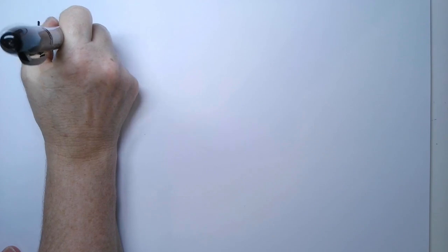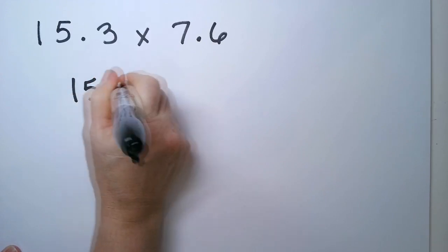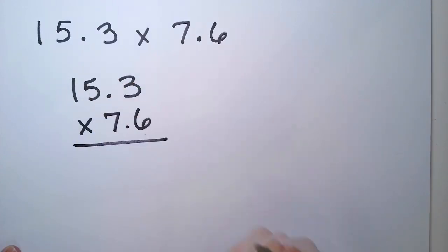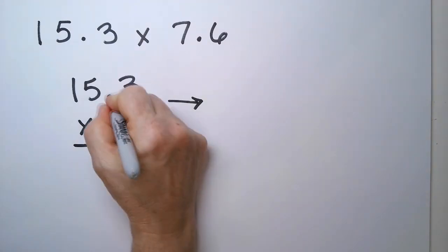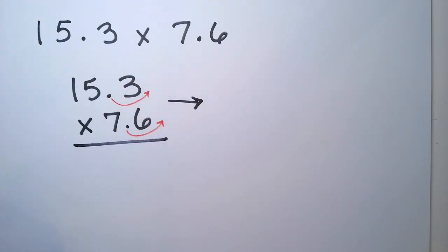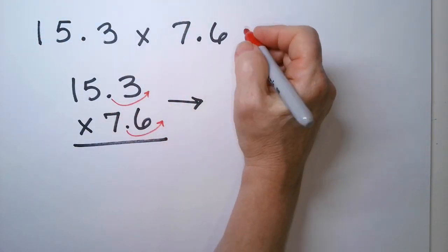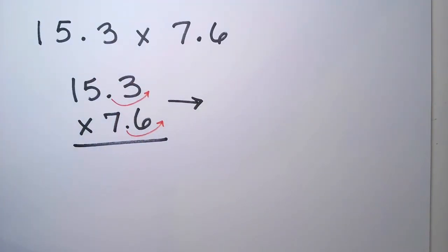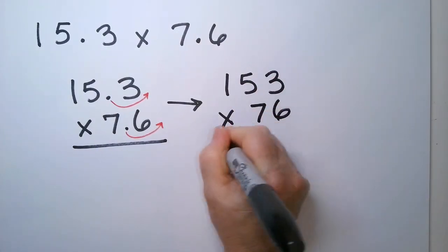Last example. I have 15.3 times 7.6. So the big takeaways for these types of problems, multiplying decimals, is that you don't have to line up the decimal point. We are converting it into a whole number problem by multiplying by some factor of 10. This number we multiply by 10. This one we multiply by 10 and this time. Sometimes it's more. It could be 10, 100, 1000. So just to make it into a whole number. Like this.